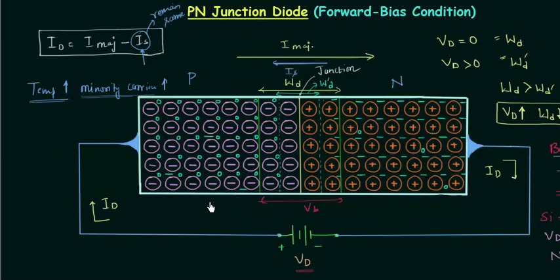In the next lecture, we will discuss the reverse bias condition of the PN junction diode. That's all for this lecture — see you in the next one.